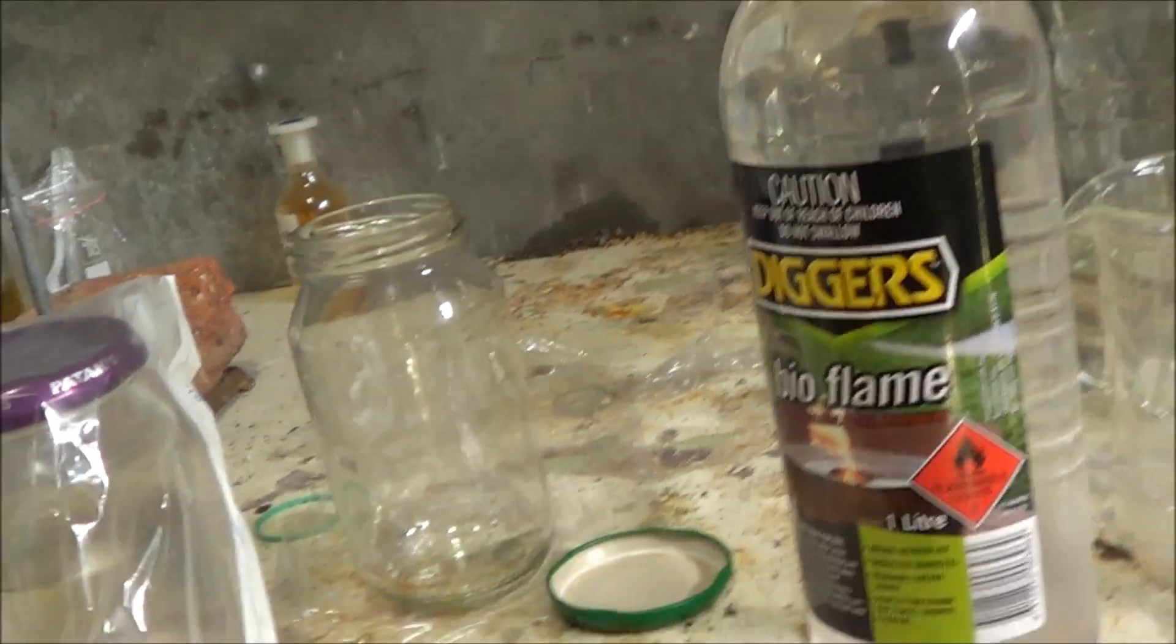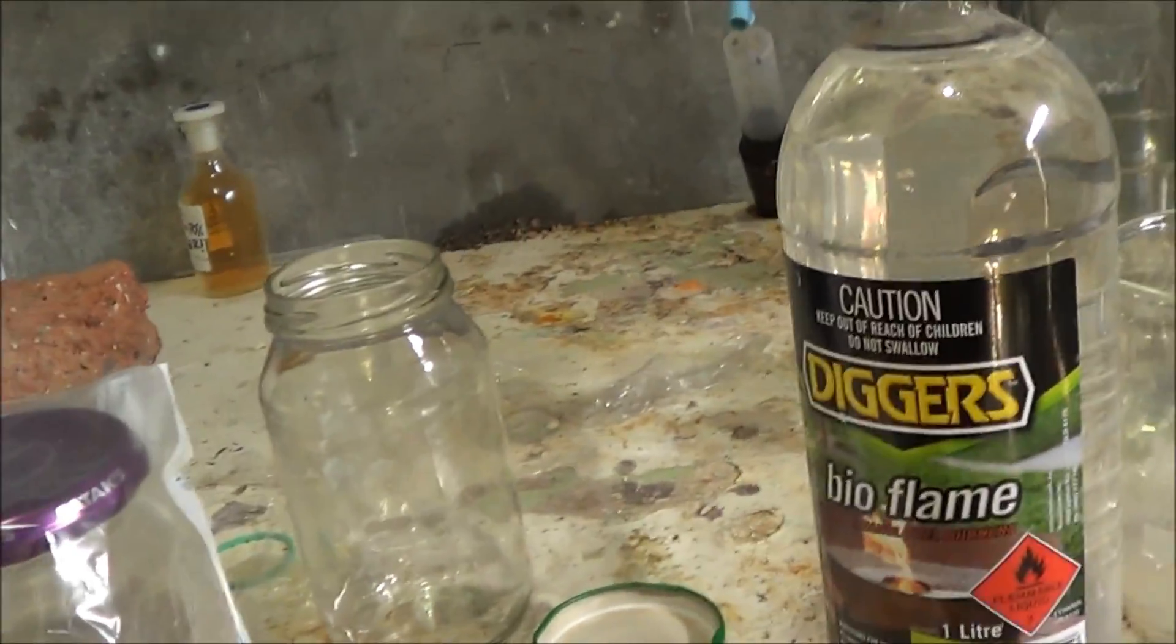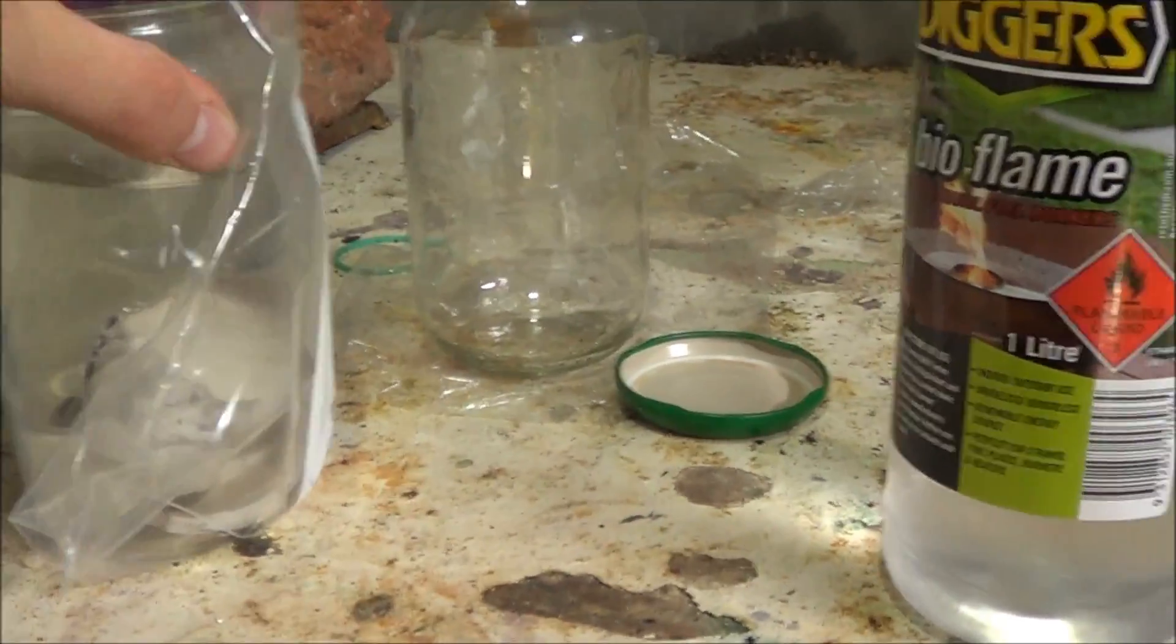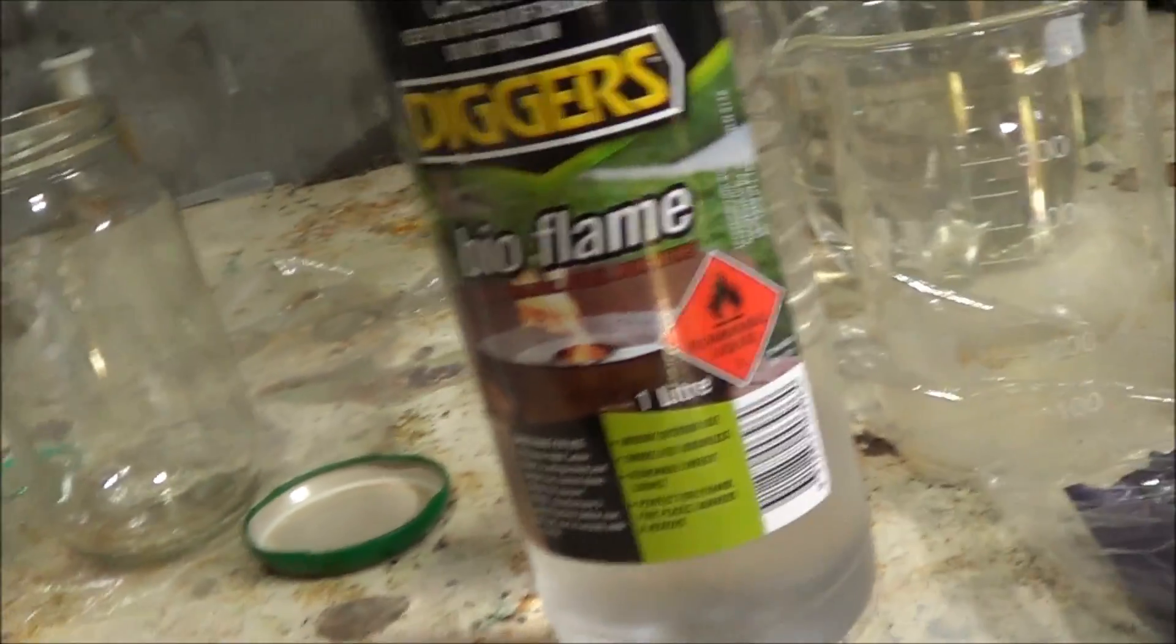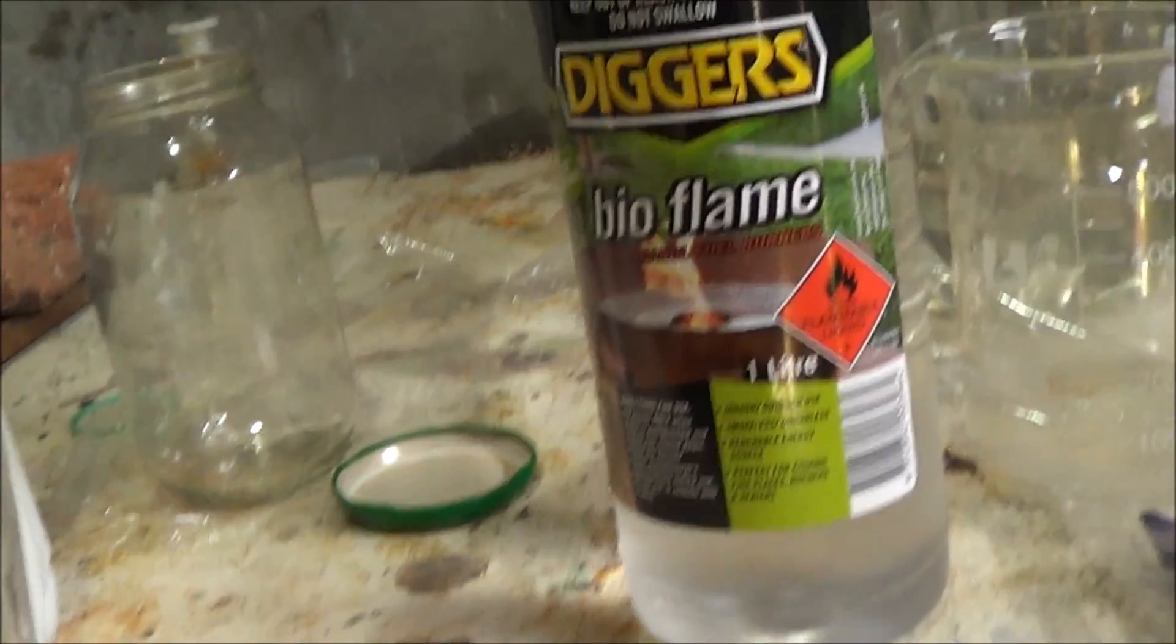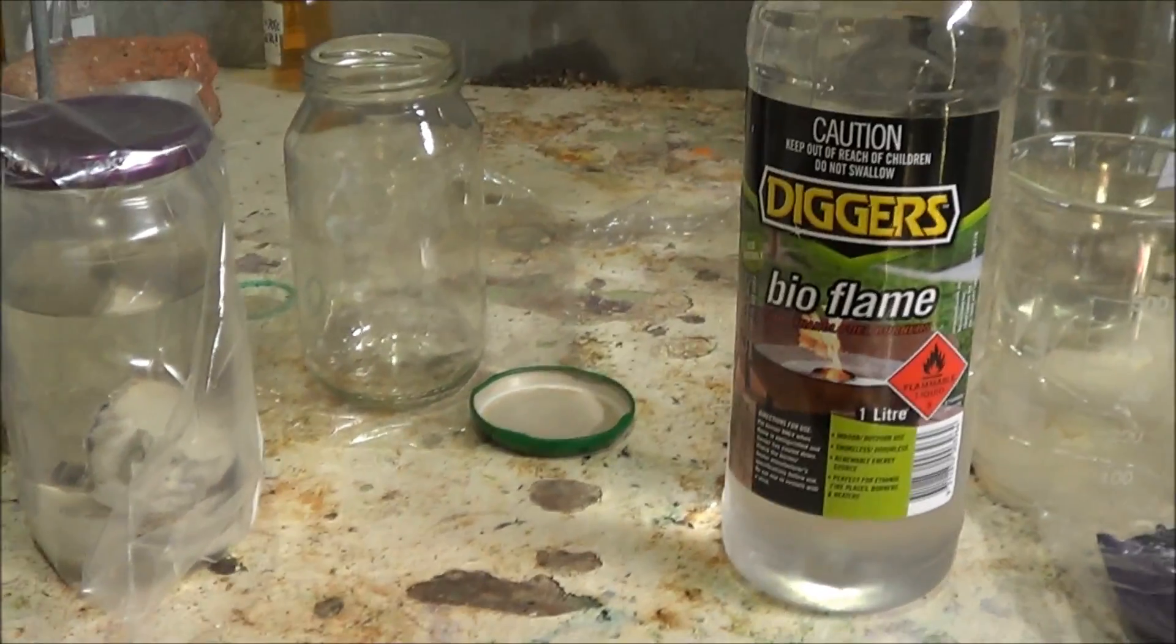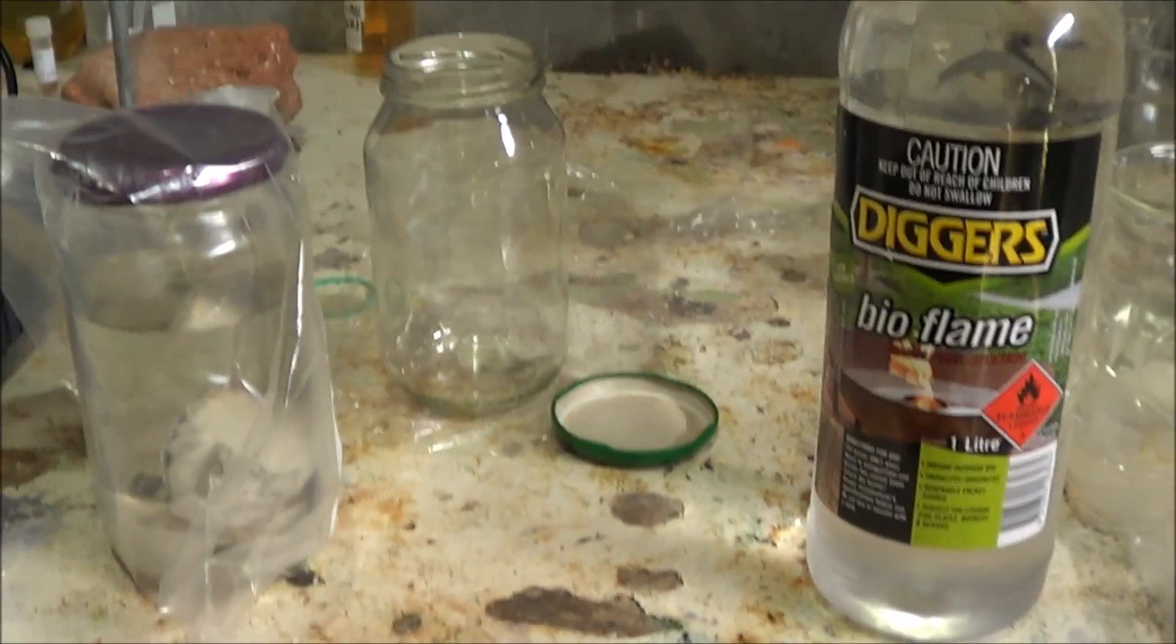So sodium metal will react with ethanol to form sodium ethoxide. Now, it will also react with water to form sodium hydroxide in the well known sodium reaction. Now, we don't really want sodium hydroxide in this mix because I feel like it will screw with things later on with nitromethane.